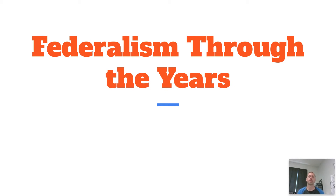What we're going to look at today is federalism and how the concept of federalism has changed throughout the years. With this lecture, we're just going to get all the way up until about the Industrial Revolution. We're going to be looking at things that Washington, Adams, and Jefferson had done, Andrew Jackson, and then we will look at federalism and how it shifted thanks to the Industrial Revolution.